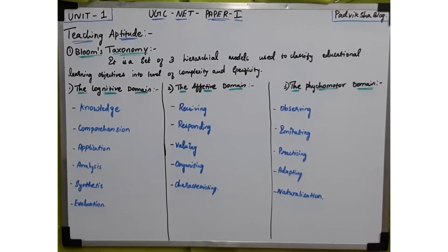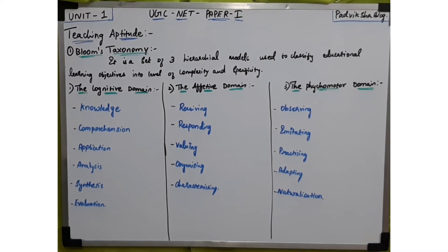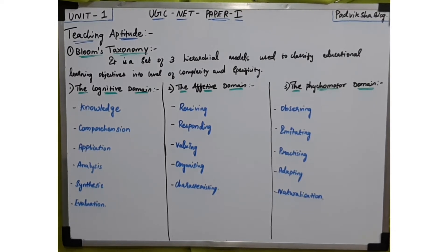The first category is receiving phenomena — the awareness of feelings and emotions as well as the ability to utilize selected attention, such as listening attentively to a friend. For example, if a student is sitting in class, receiving phenomena only works if the student is attentively attending. If you are not listening attentively, receiving phenomena will not work.